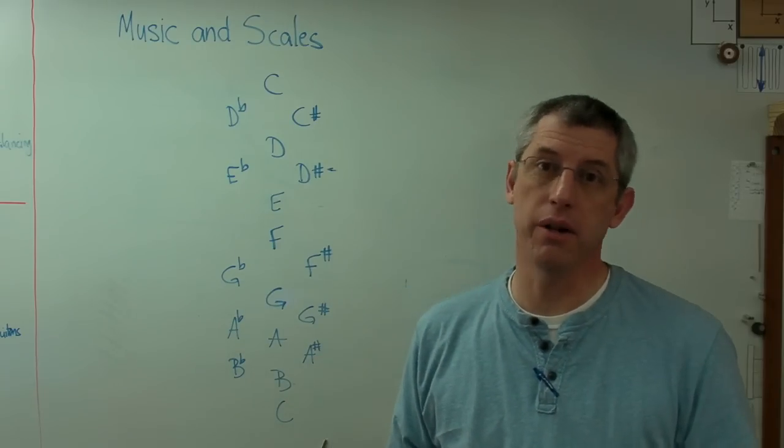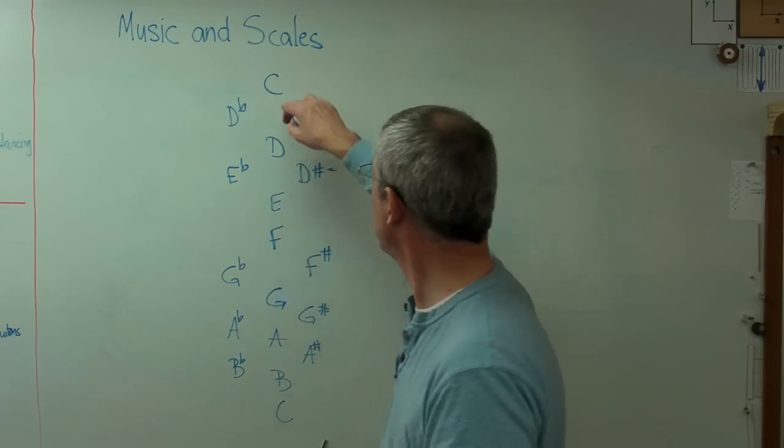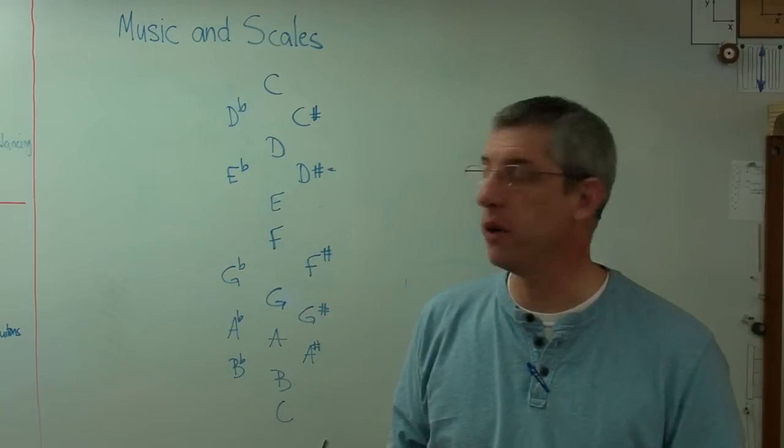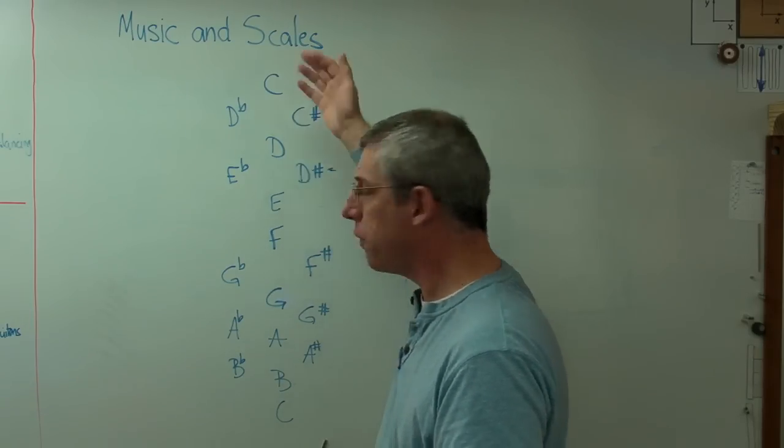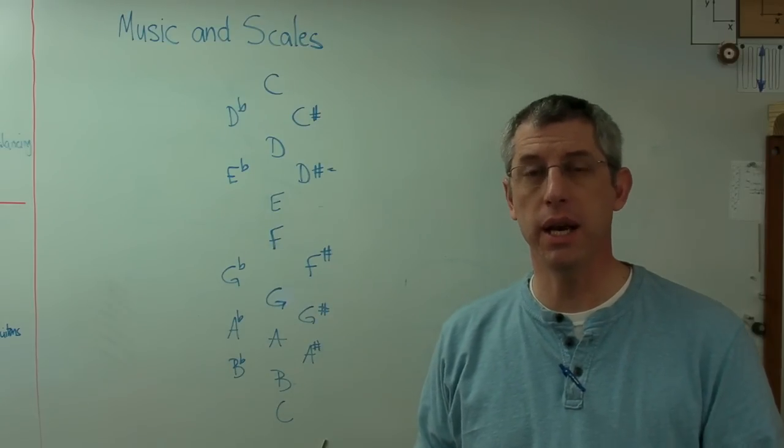Now, the way the notes are named, when they're named with letters, they could have been named anything. We could have called them Bob and George and Mary if we wanted to. But for whatever reason, they're called by letters: A, B, C, D, E, F, and G.